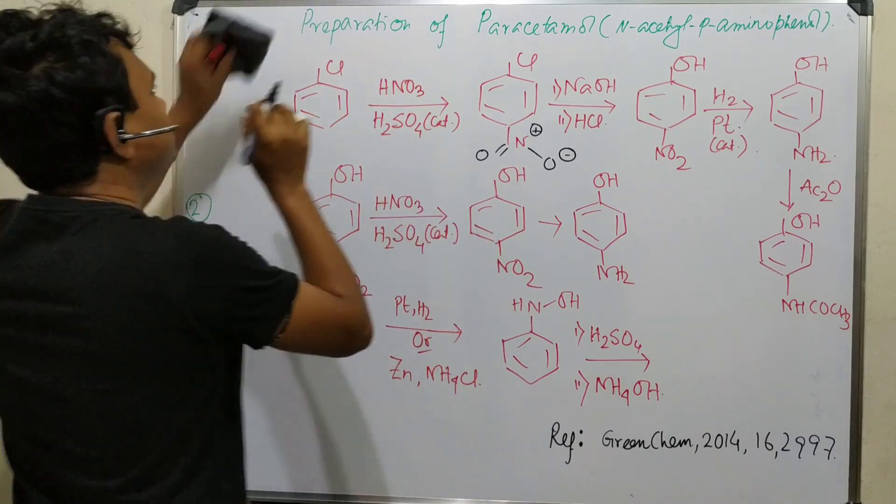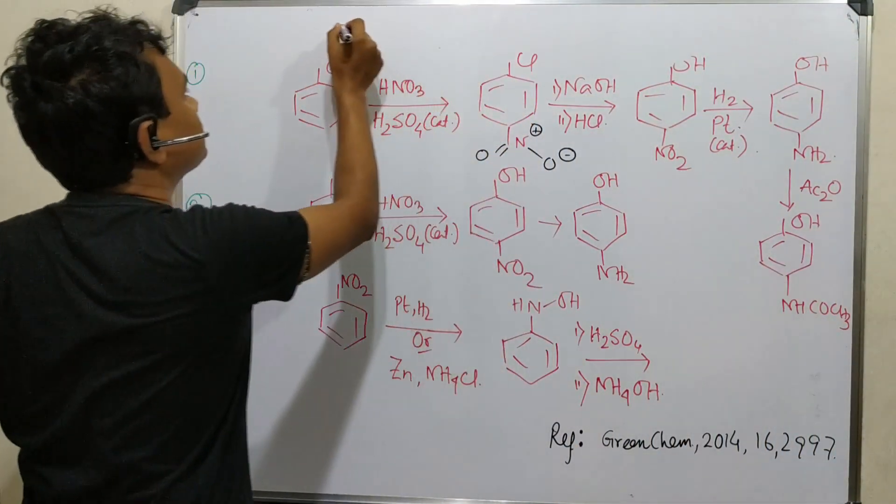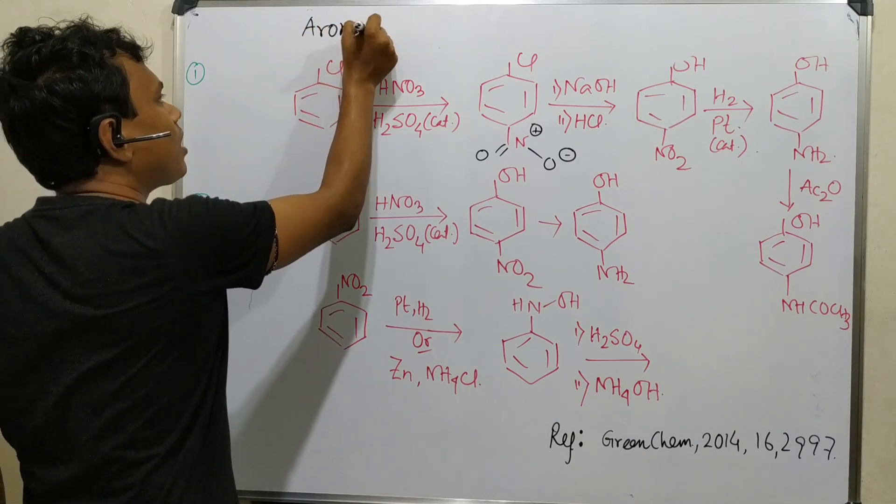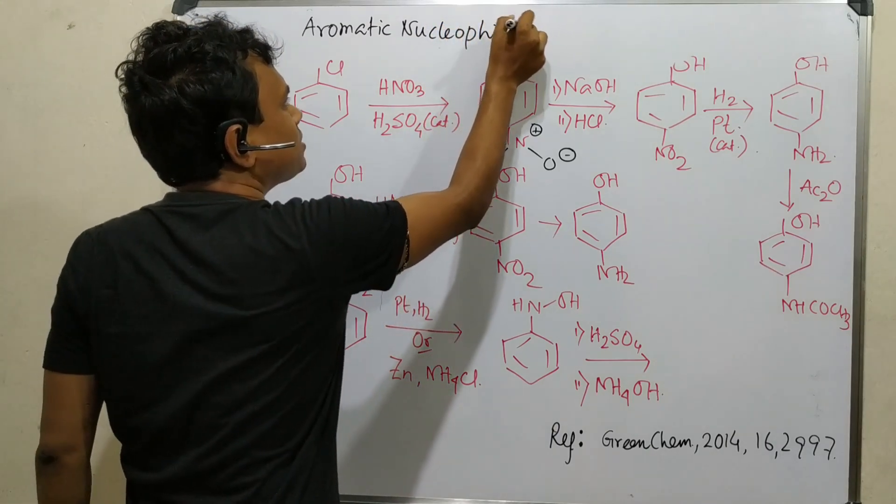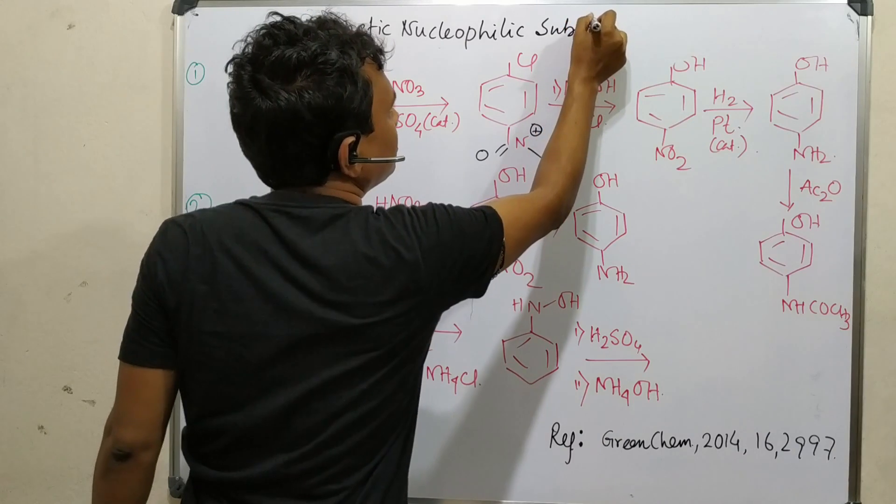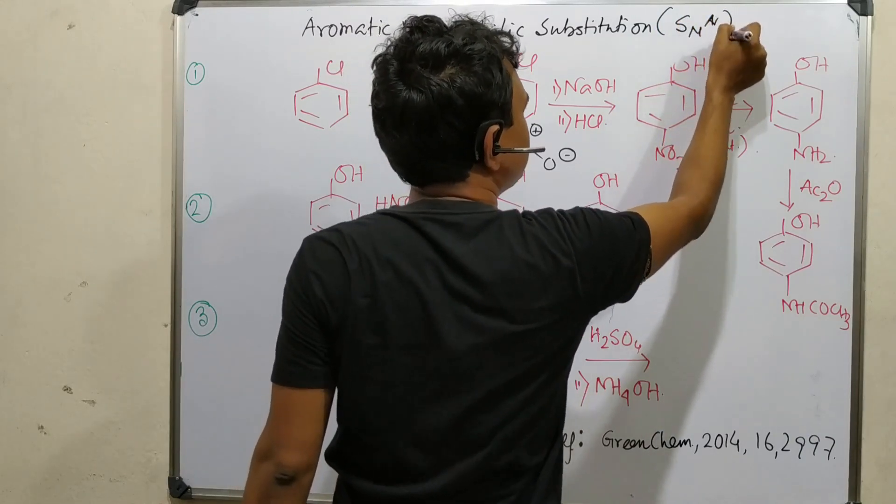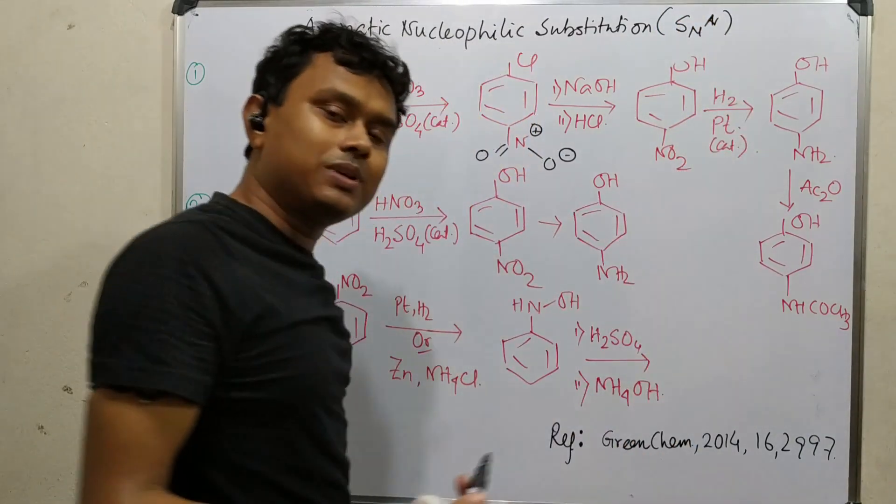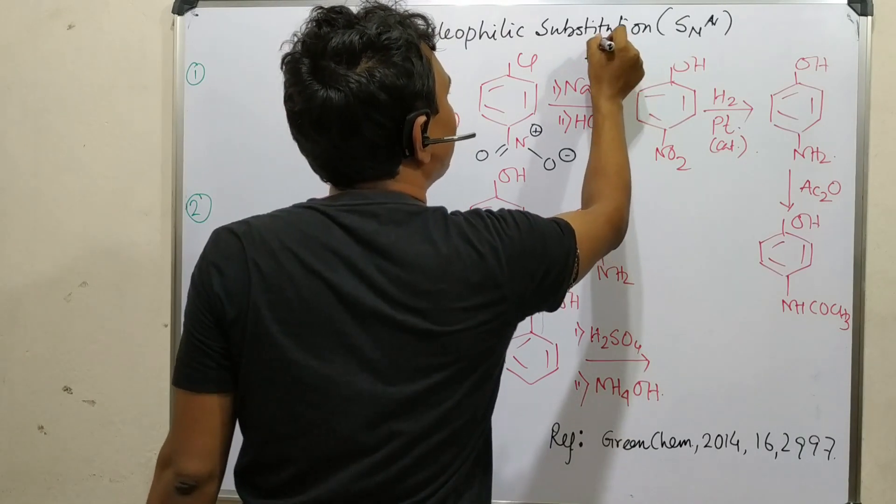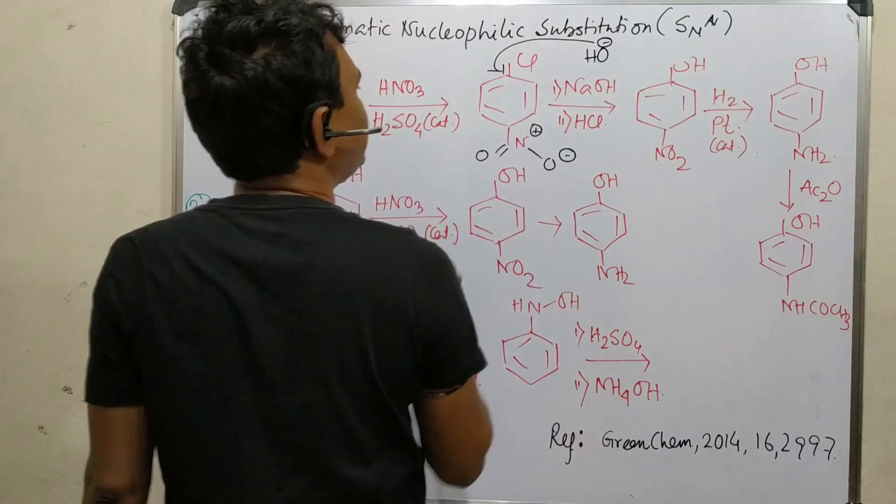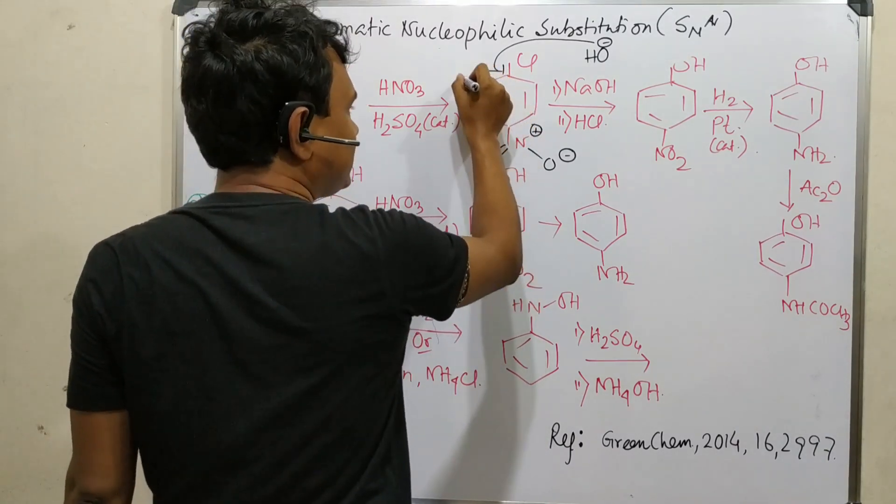Please keep this term in mind: aromatic nucleophilic substitution. Somebody can write that SNAr - substitution nucleophilic aromatic. Why this has happened? Because this HO minus attacks here. If it attacks, then it opens. It opens means negative charge first comes here.